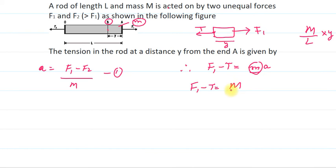So in place of small m I can write M by capital L into y. This is the mass small m into acceleration. Acceleration we have F1 minus F2 upon M.